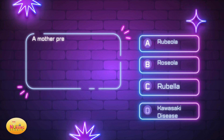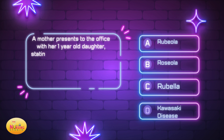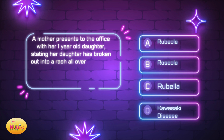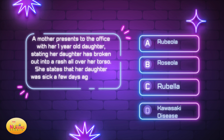Question number three: a mother presents to the office with her one-year-old daughter, stating her daughter has broken out into a rash all over her torso. She states that her daughter was sick a few days ago but has been doing well since. Upon exam, the nurse practitioner notes a maculopapular rash to the one-year-old's torso. How should the nurse practitioner diagnose? Is it A, rubeola; B, roseola; C, rubella; or D, Kawasaki disease? Take a moment and tell me what you think in the comments.